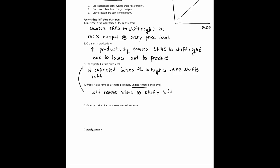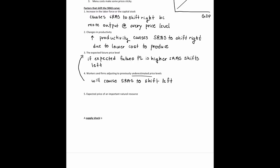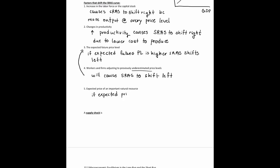In both of those cases — expected future price level and adjusting to underestimated price levels — workers and firms are going to increase their wages and their prices. The last factor is the expected price of an important natural resource. If the expected price increases, then the cost of producing increases, which causes a left shift of SRAS.